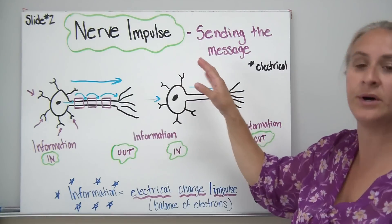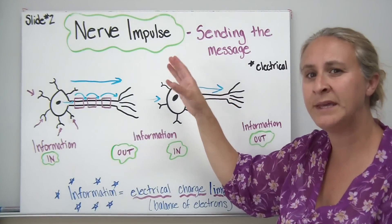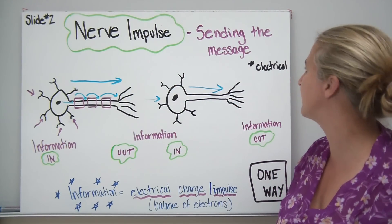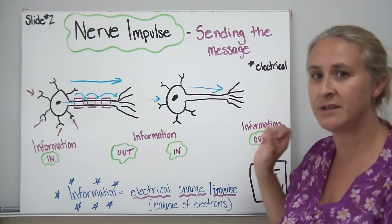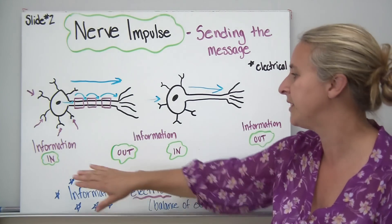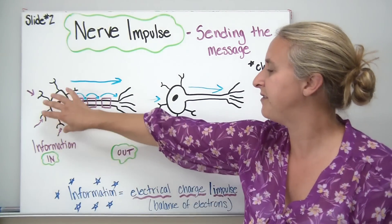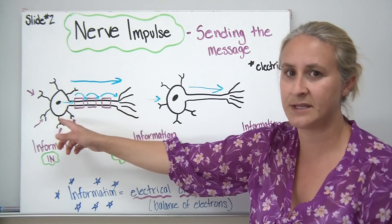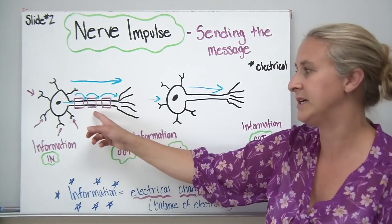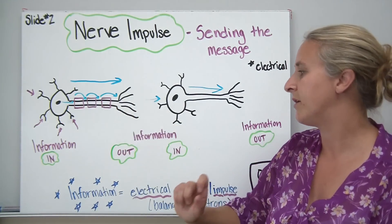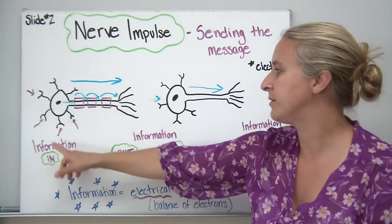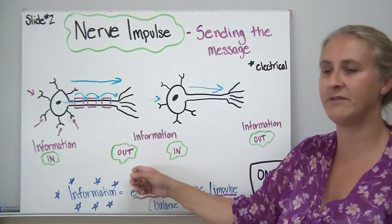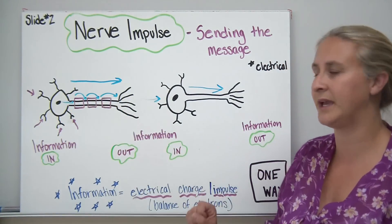A nerve impulse means we're sending an electrical message. If this is our nerve cell, we have dendrites at one end with the cell body, going down through the axon to the opposite end — information comes in on one side and goes out on the other.